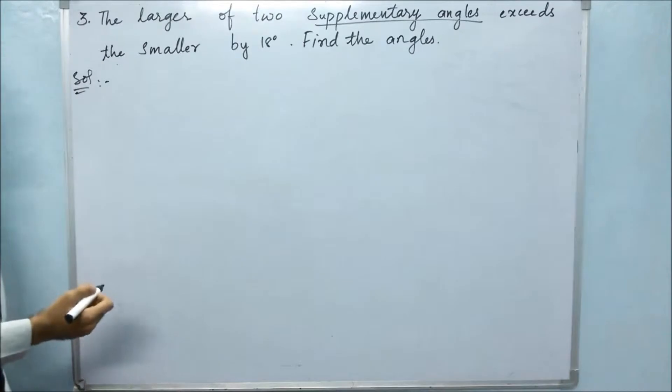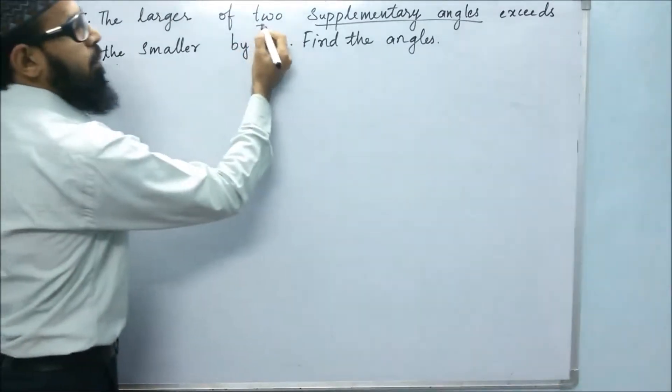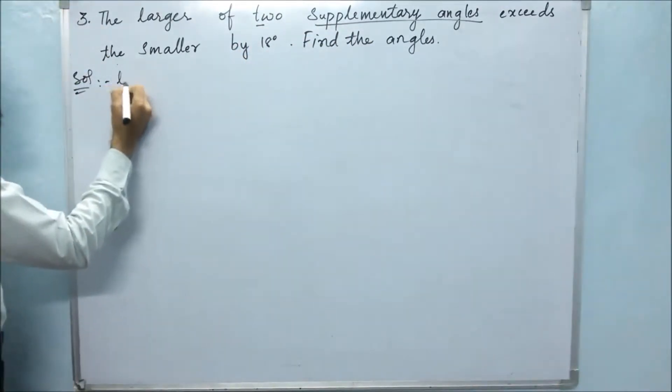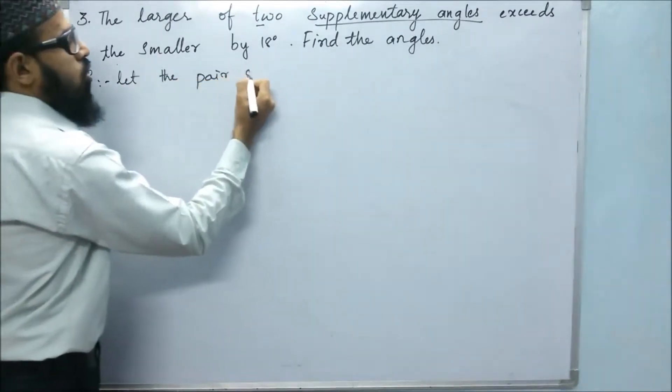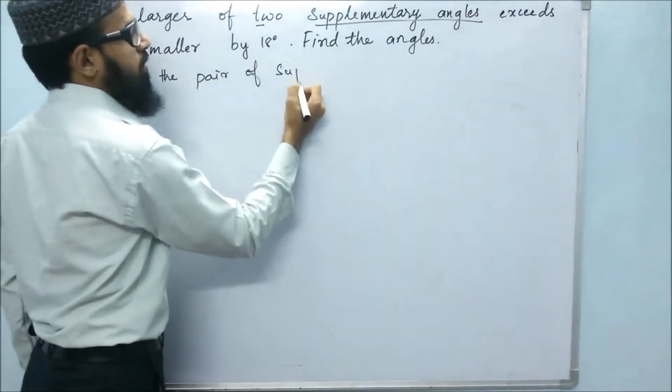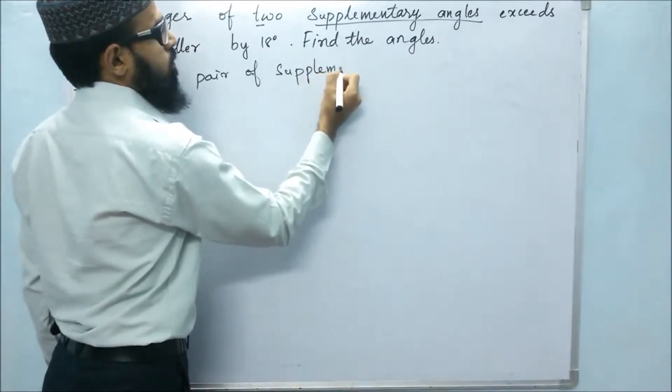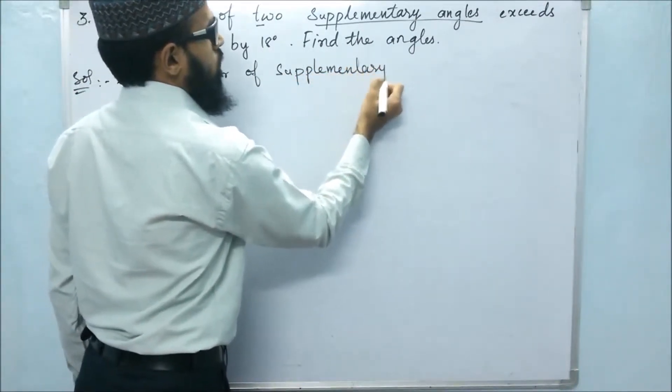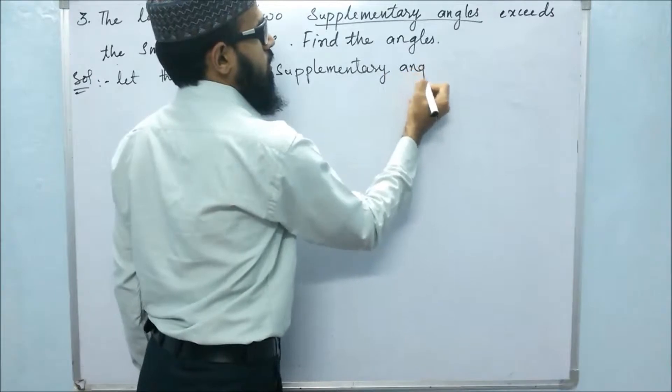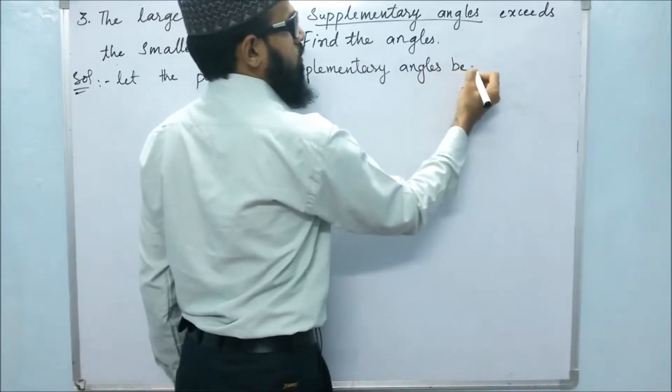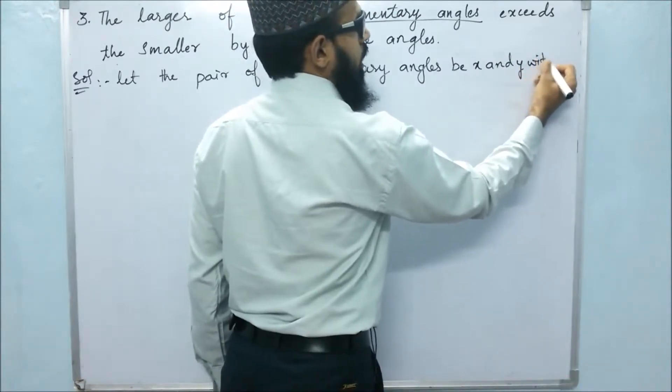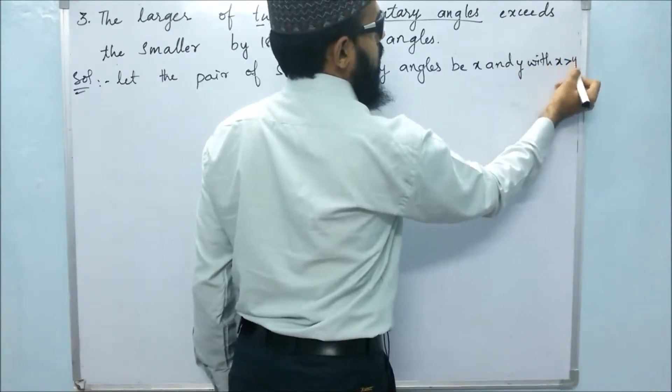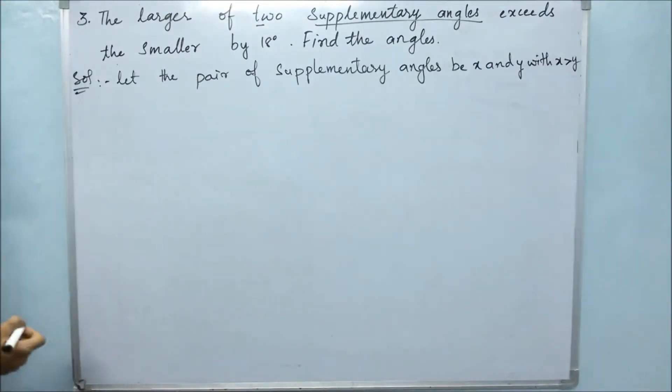We don't know the angles, so let those two supplementary angles be - let the pair of supplementary angles be x and y, with x greater than y.